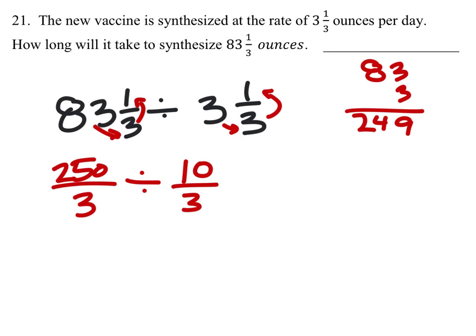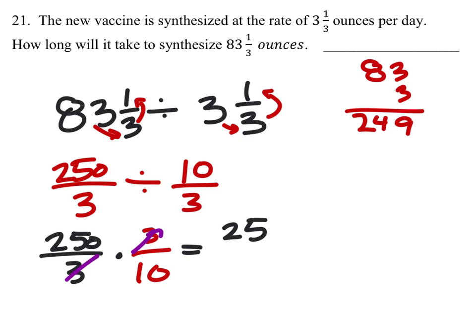But again, we don't divide fractions like this. We only multiply them. 250 thirds times 3 tenths. Well, we can cancel out the 3s right there. And that would give us 250 over 10. And the zeros cancel out, giving us 25.